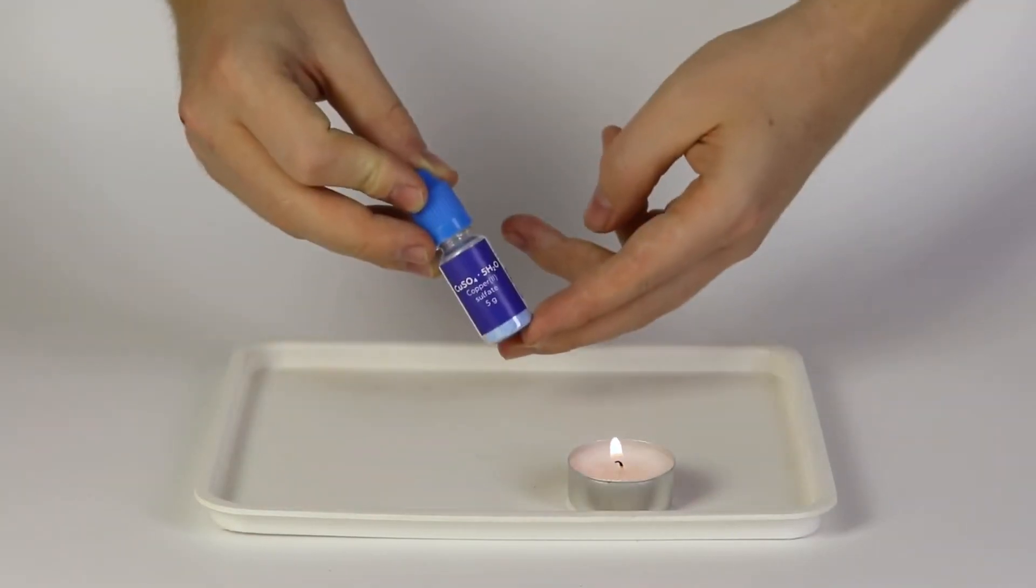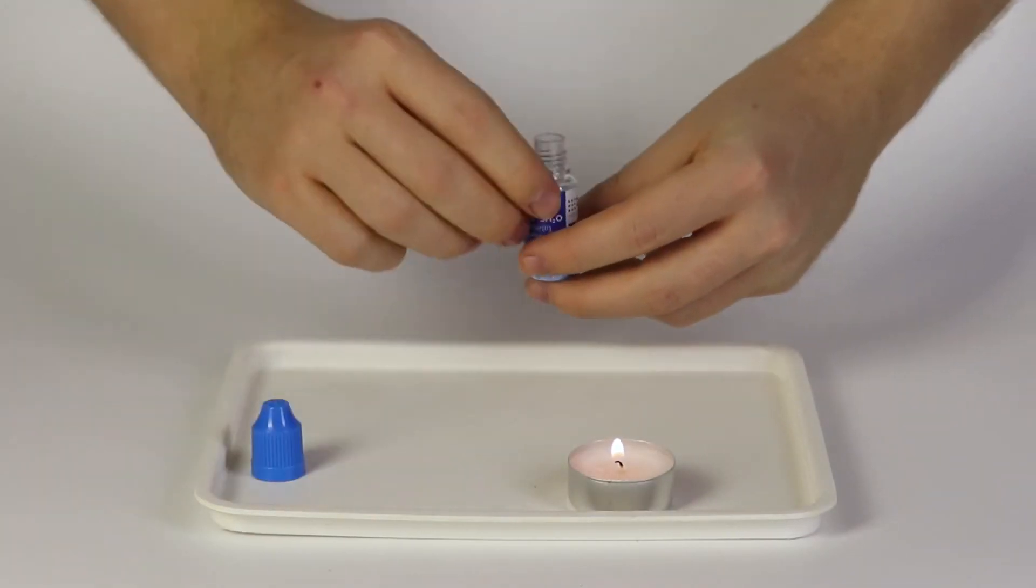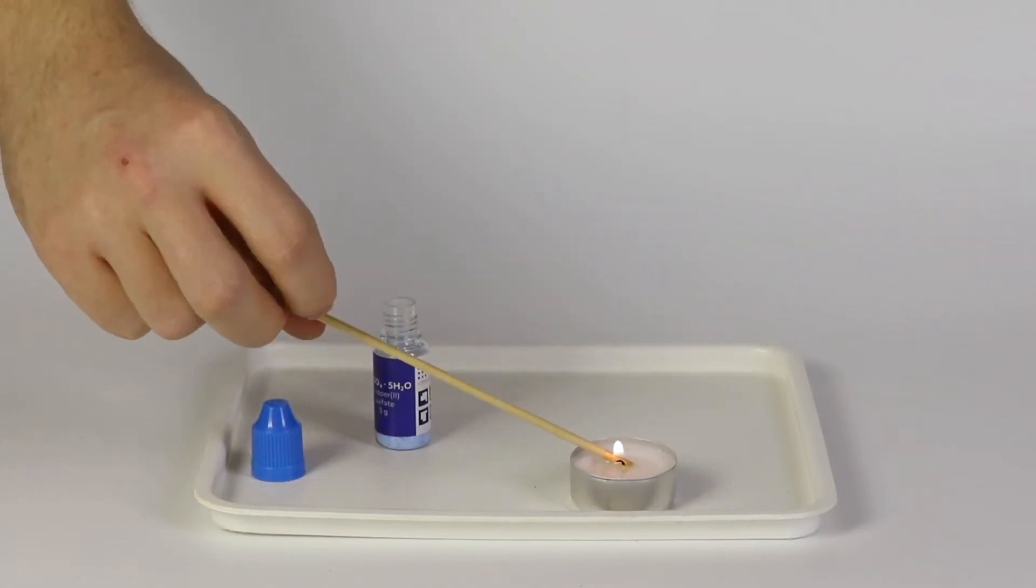Open the bottle with copper sulfate. Take the splint and dip it into the melted paraffin and then into the bottle.